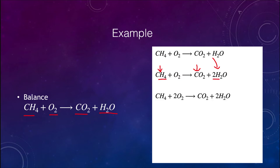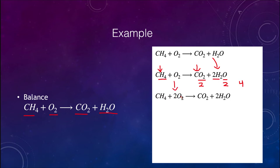Now we need to balance the oxygen. We have two oxygens in CO2, and two oxygens in two H2O molecules — so there are four oxygens on the right-hand side. We need to get four oxygens on the left side. Each O2 molecule has two oxygens, so two of those molecules would give us four oxygens.